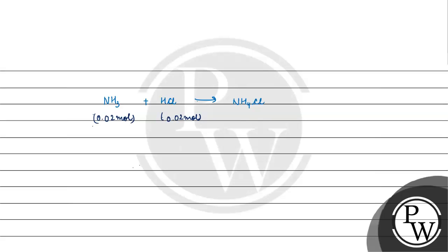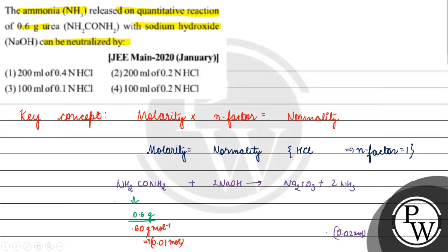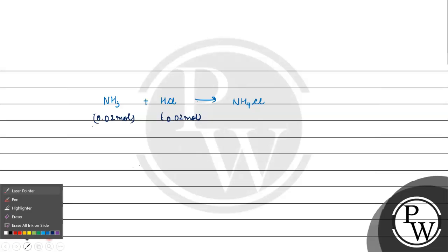If we need 0.02 mols HCl, we need to check which option has this. The options are given in terms of normality. For HCl, molarity and normality are equal.